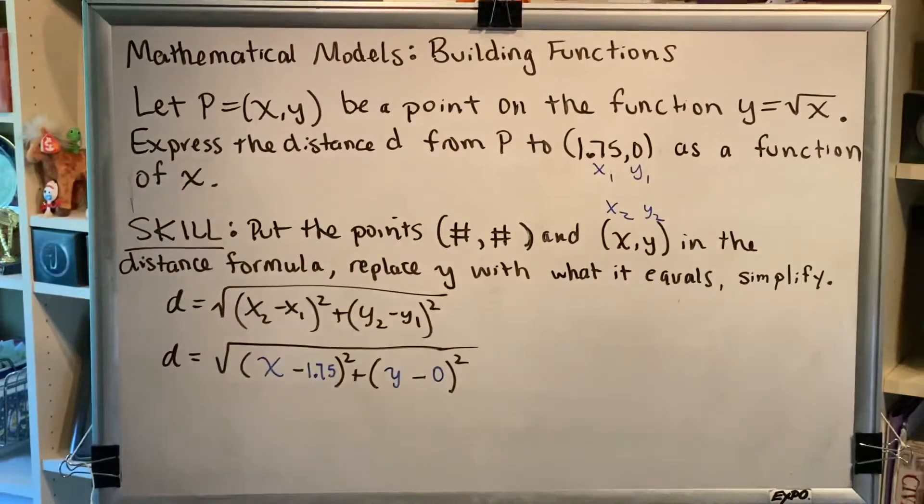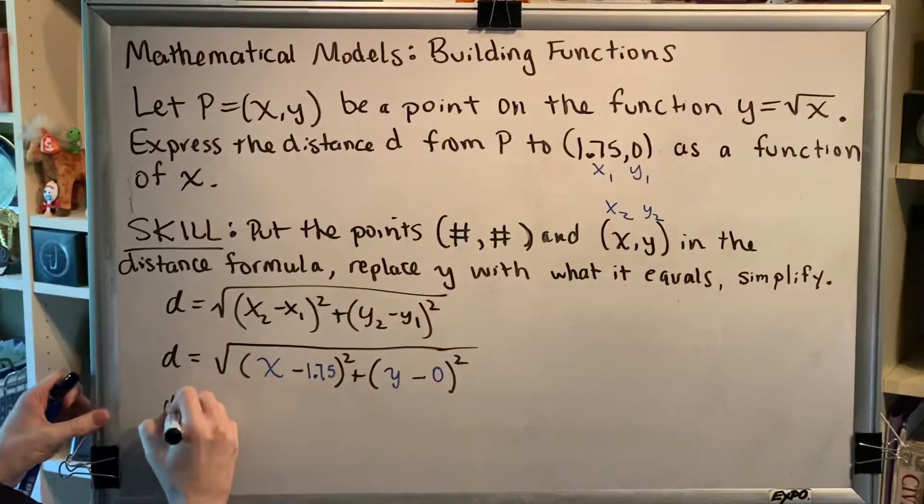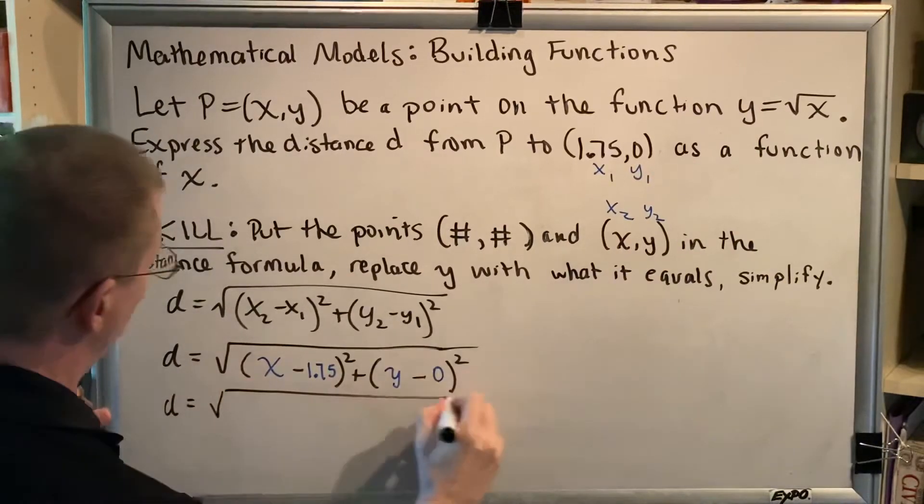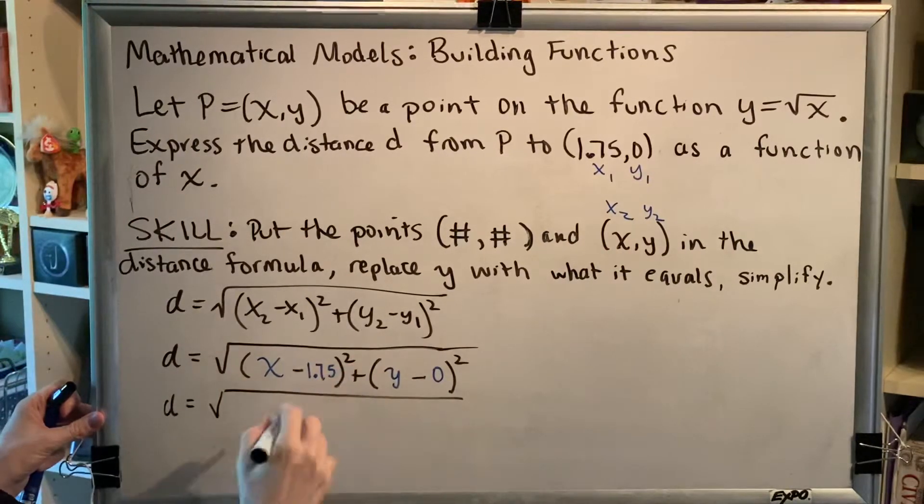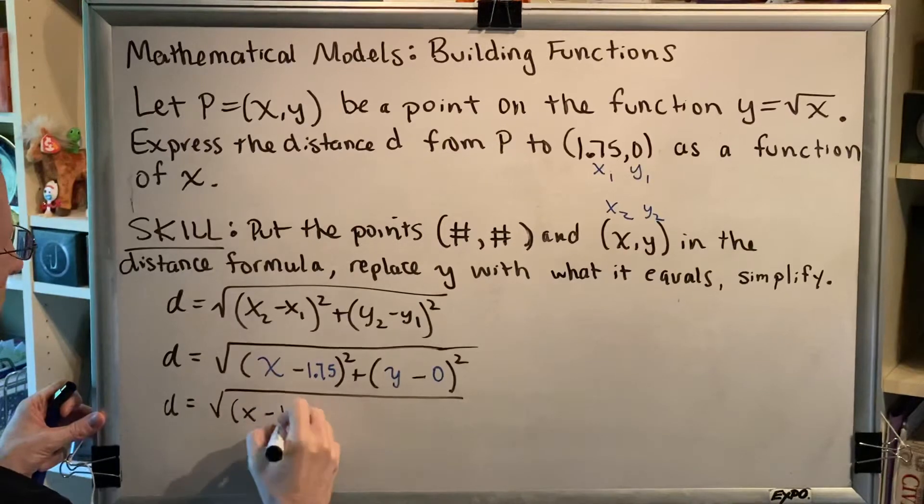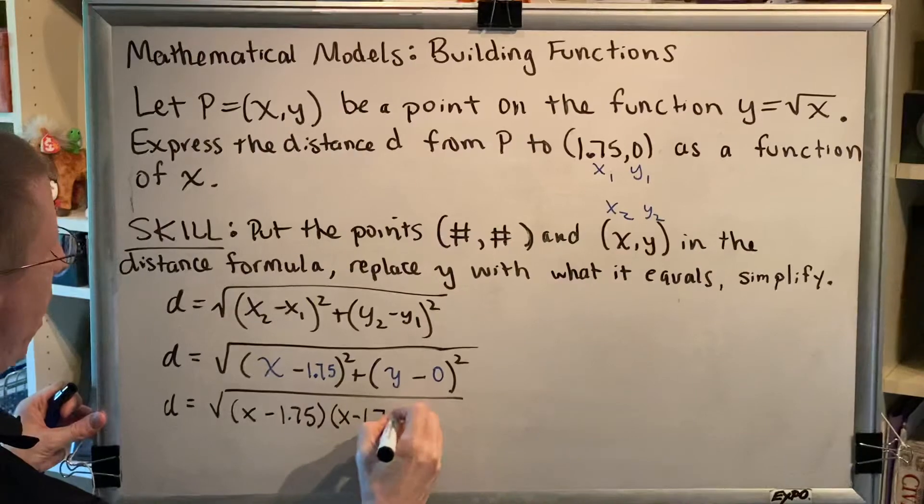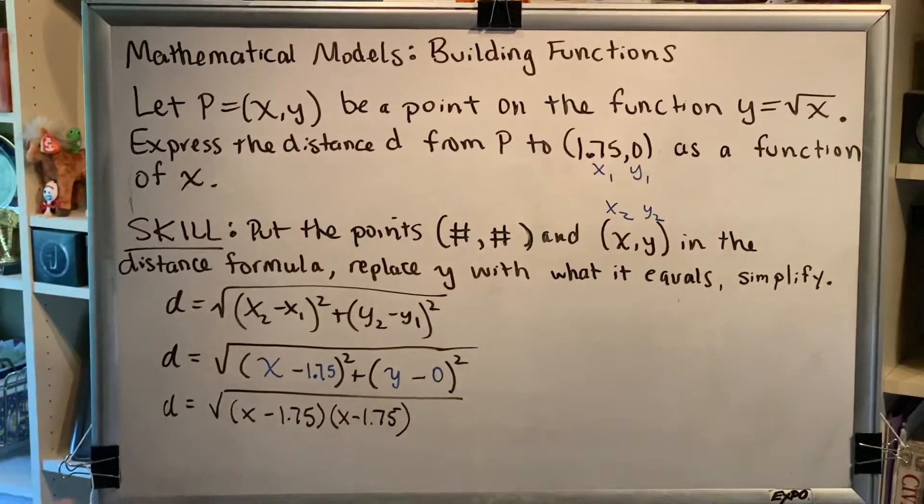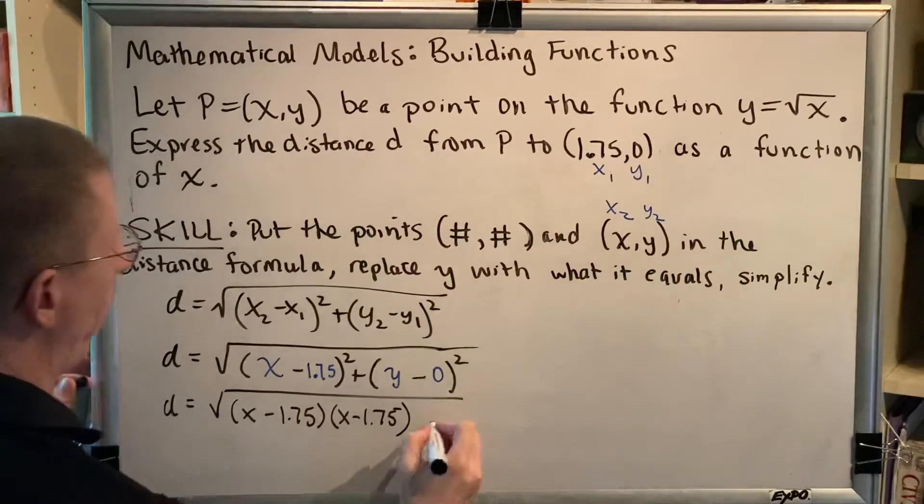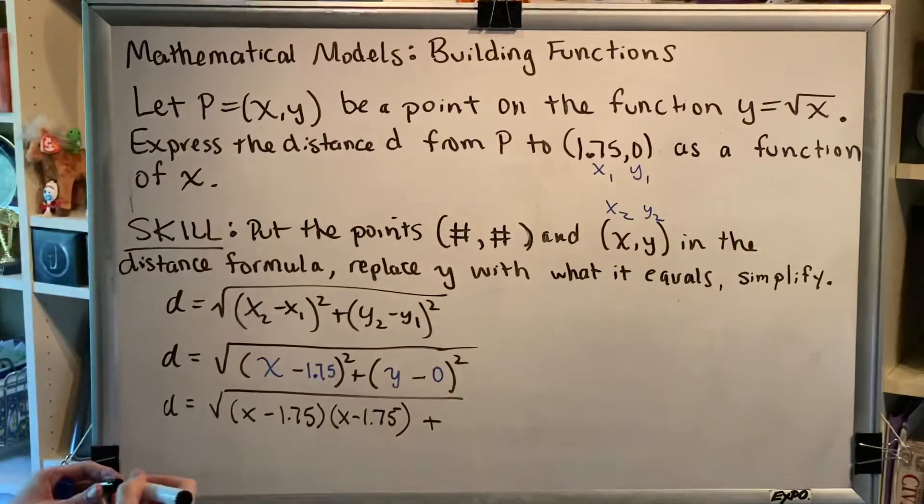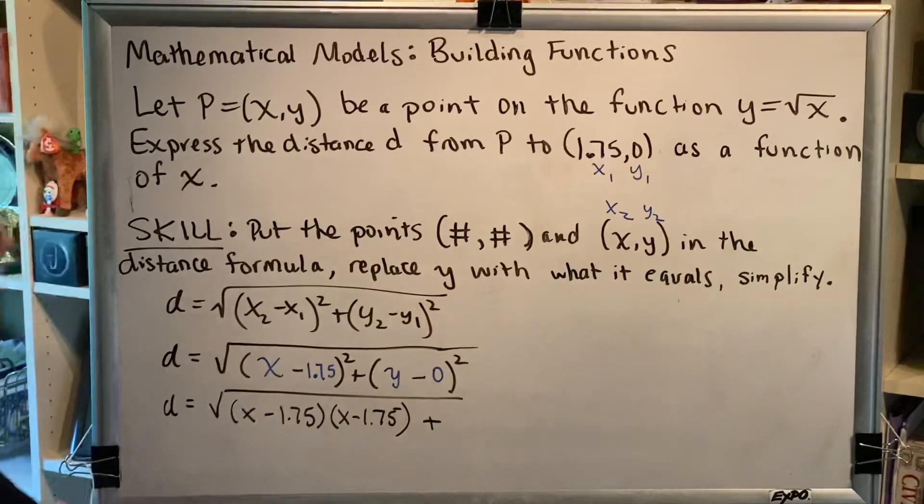Okay, now we're going to begin to simplify. So an exponent tells me how many times to multiply a base by itself. So this is going to be (x-1.75) times another (x-1.75) which I will multiply with FOIL. Next we turn our attention to this part of the problem.